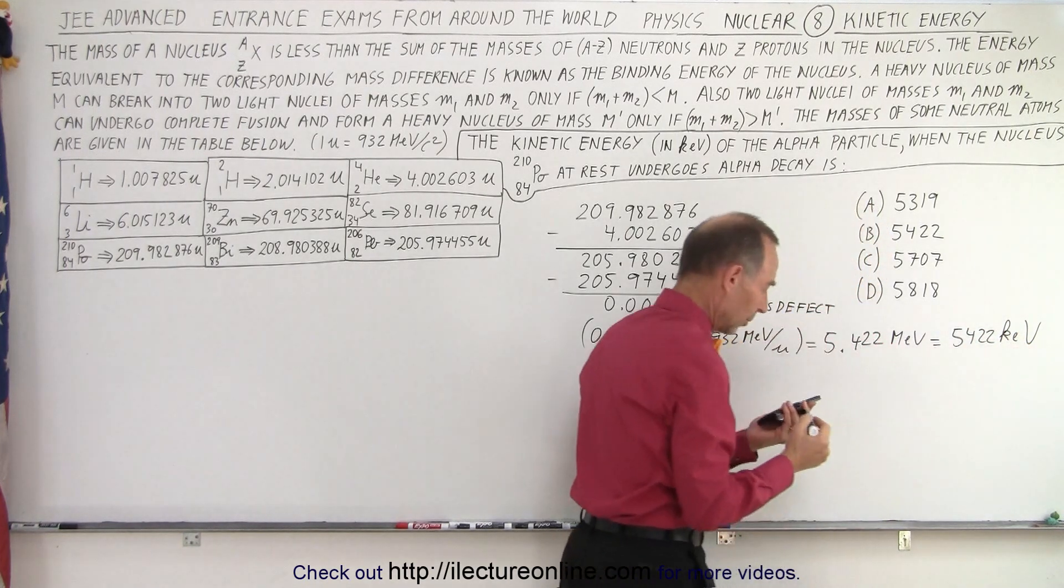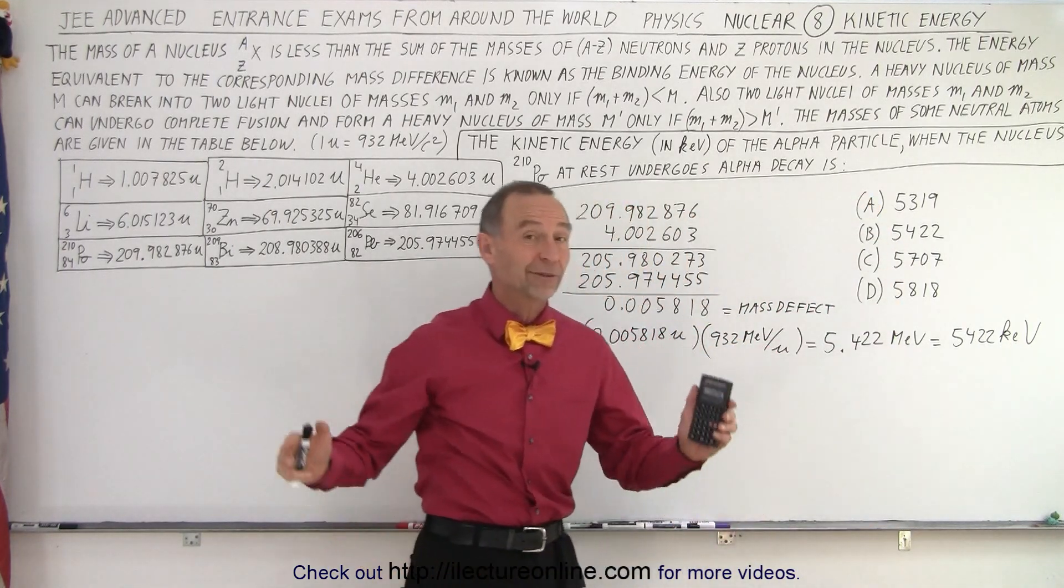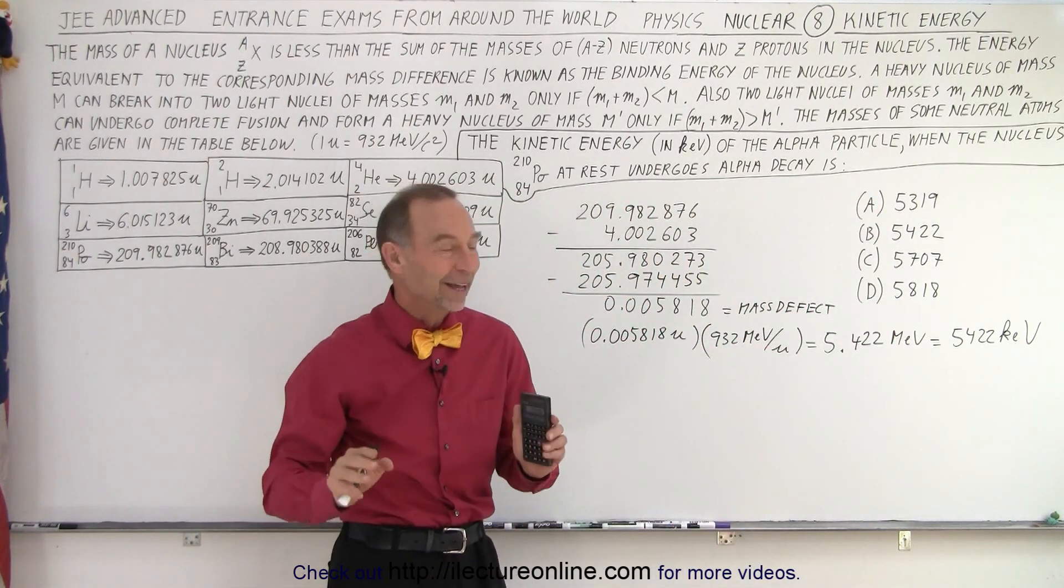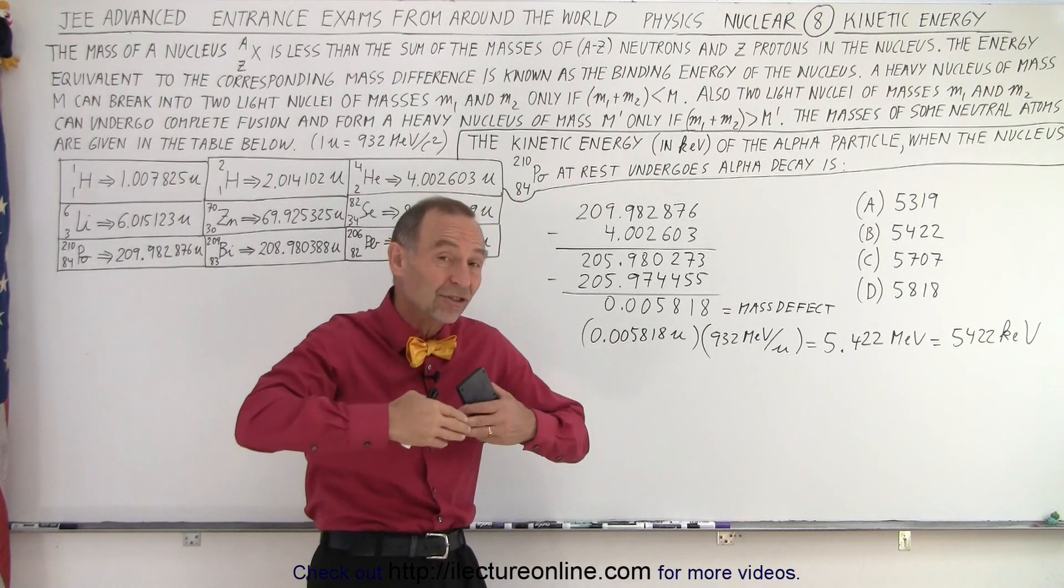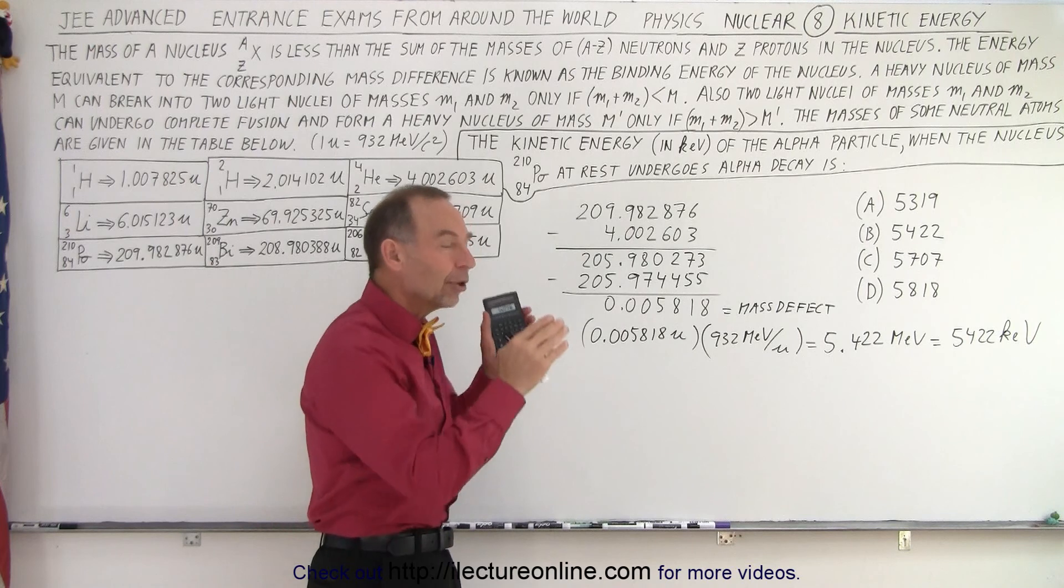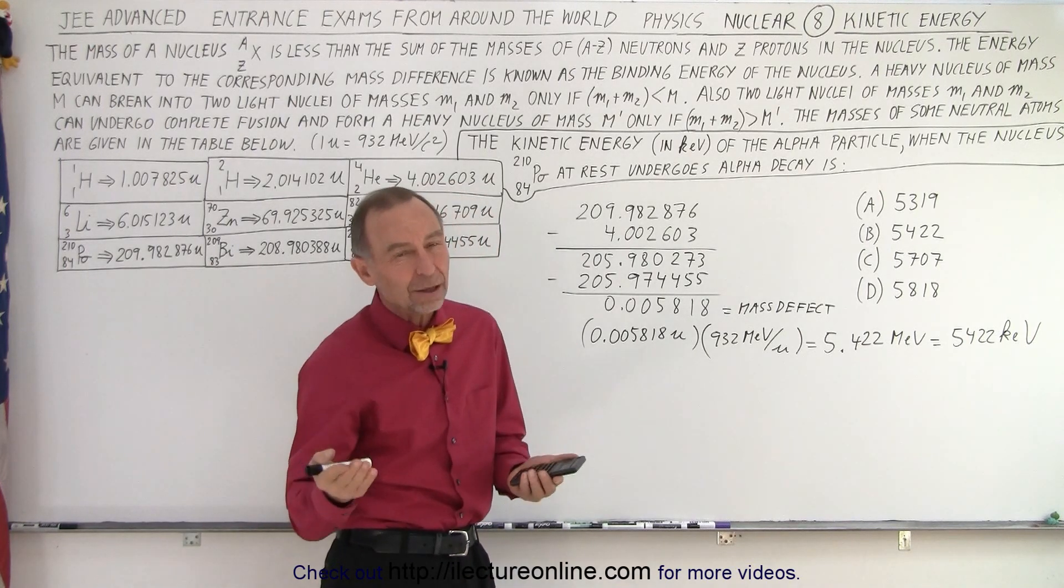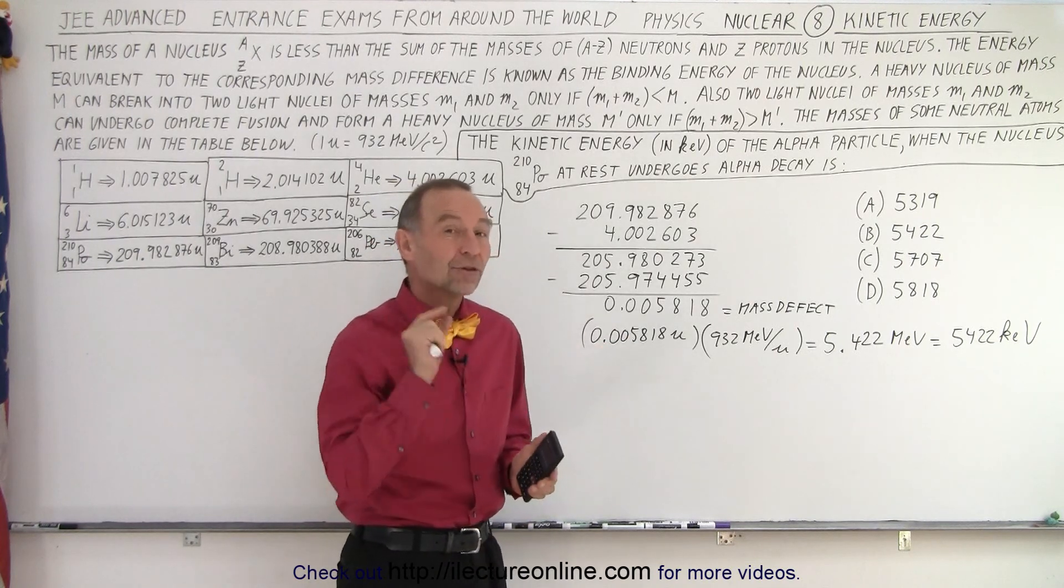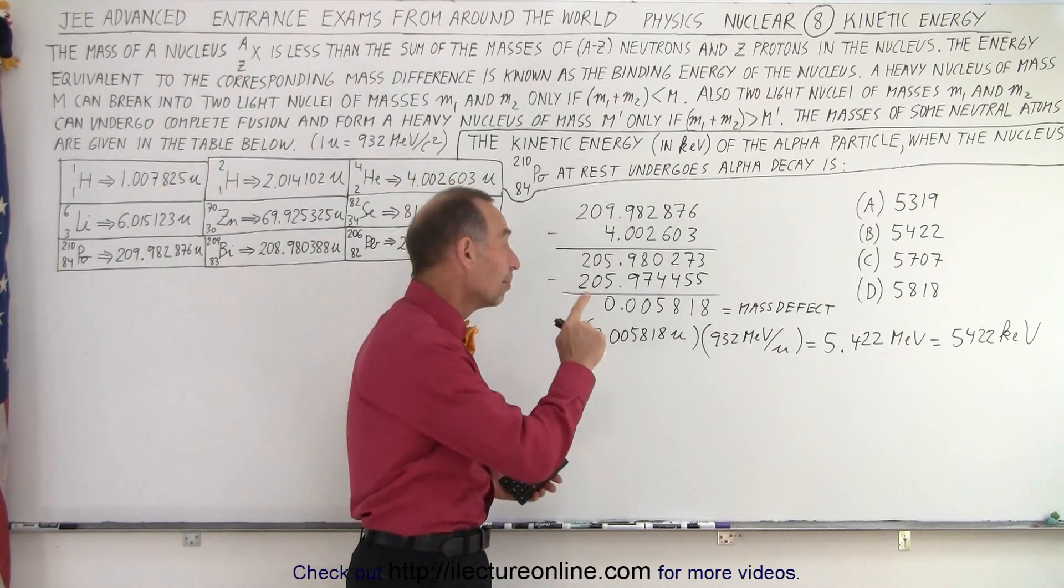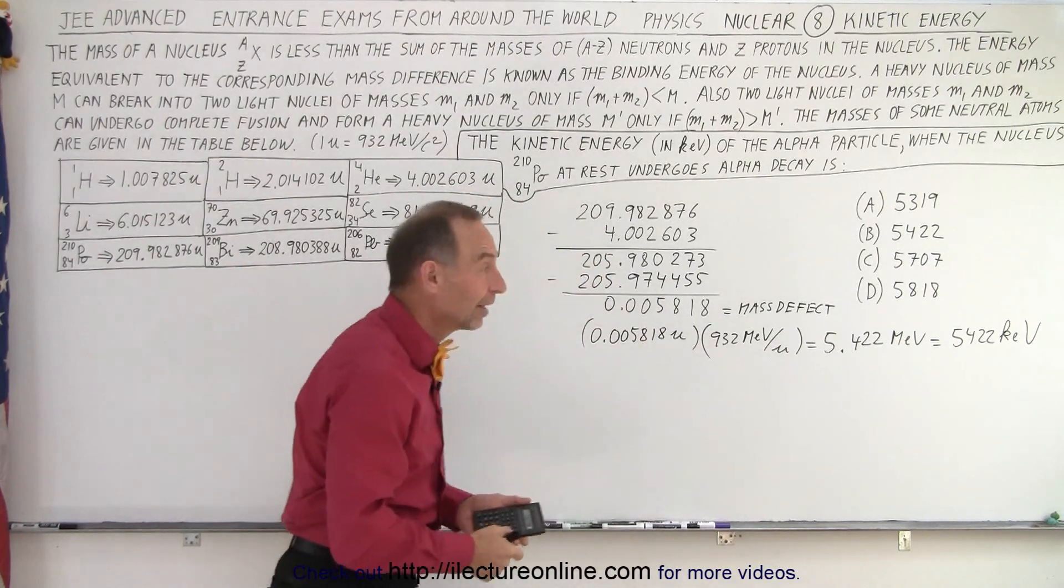And so we end up with 0.005818 atomic mass units multiplied times 932 MeV per atomic mass unit, we end up with 5.422 MeV, which is 5,422 KeVs. And at this point, you may go, wow, look, I found the right answer, and circle B and move on. If you did that, you end up with the wrong answer. That's not the right answer. Remember, this is the energy released, but not all of the kinetic energy goes to the alpha particle.